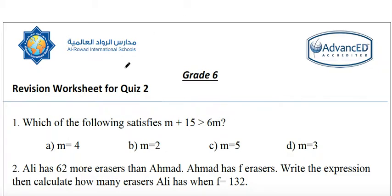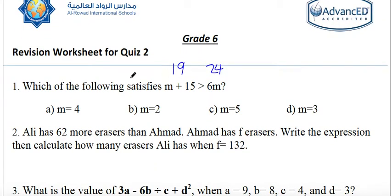Let us try m equals 4. If you put 4 here it will be 4 plus 15 equals 19, and 6 times 4 equals 24. This relation would not be true because 19 is less than 24. If we take m equals 2, it will be 2 plus 15 equals 17, and 2 times 6 equals 12. It will be true because 17 is greater than 12.